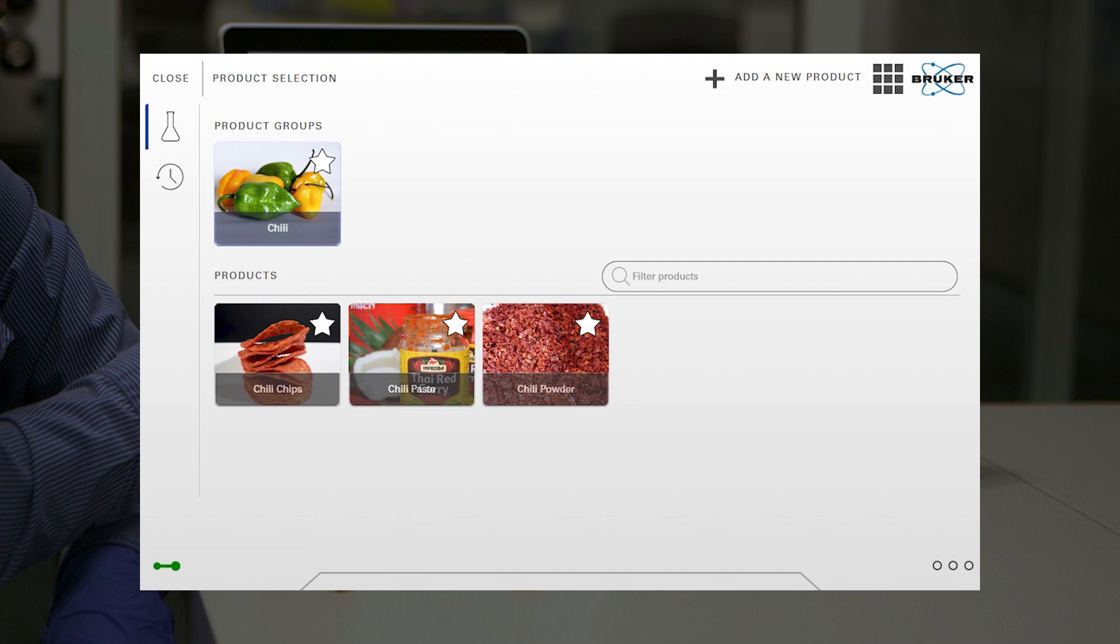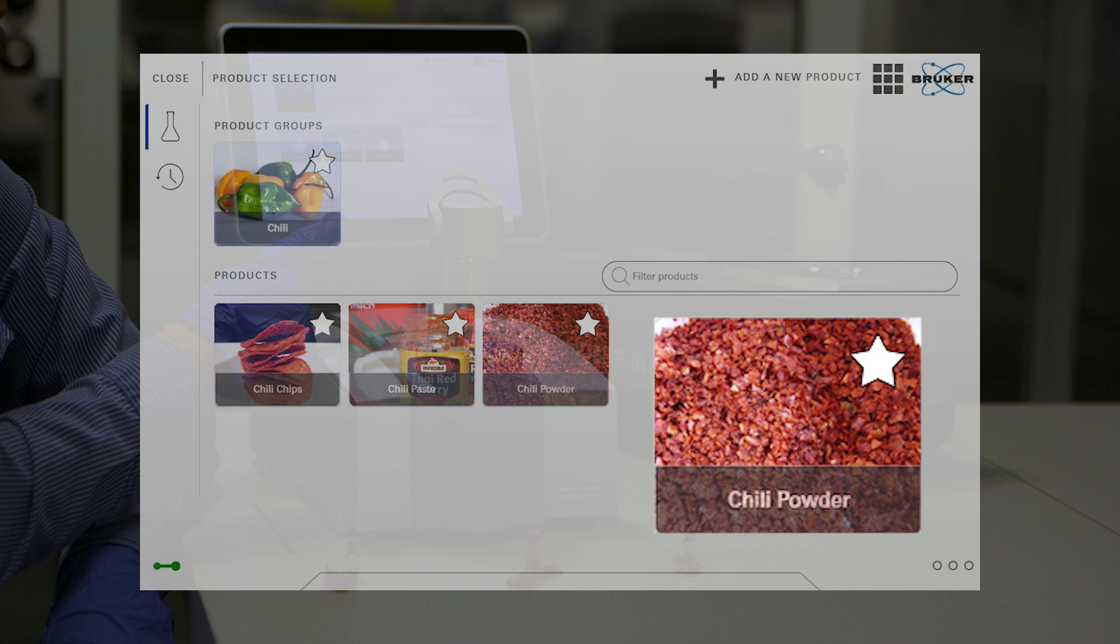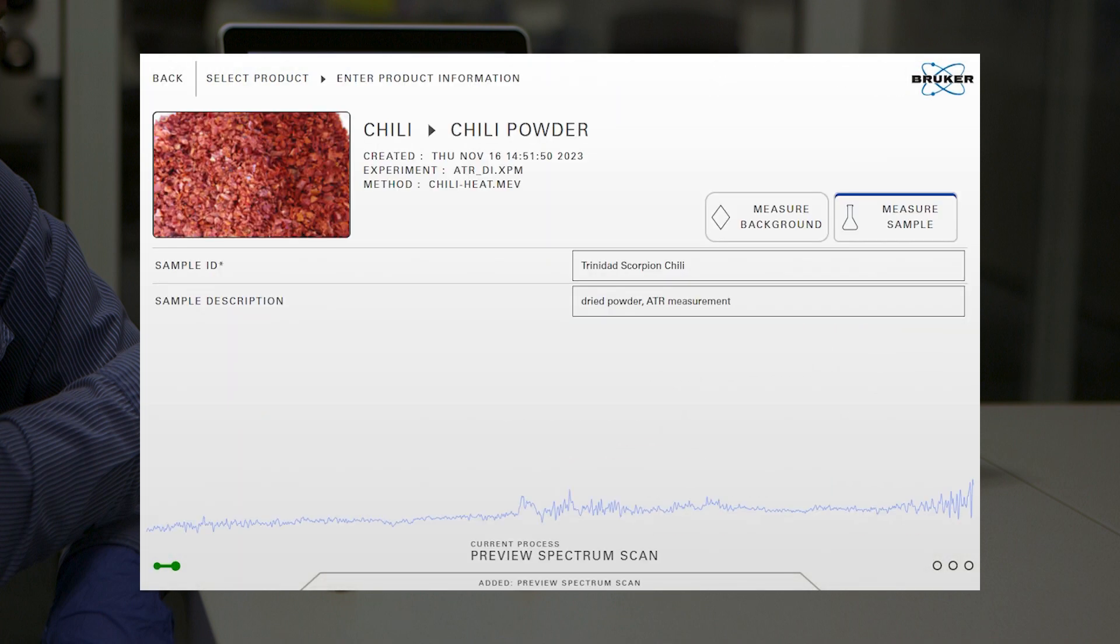We select the product we want to test in Opus Touch, in our case chili powder. Such product-specific workflows combine multiple related methods into a nice push-button analysis.